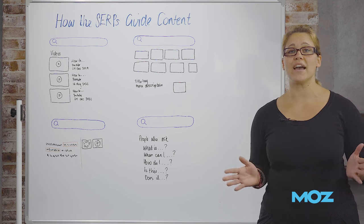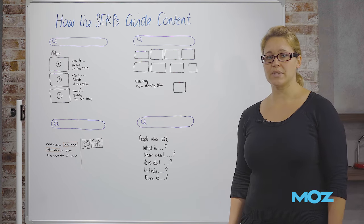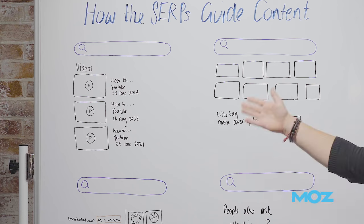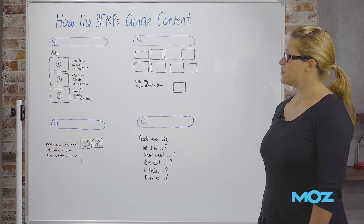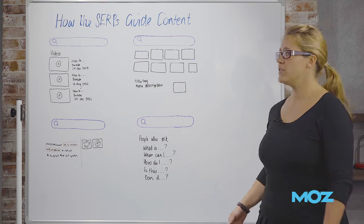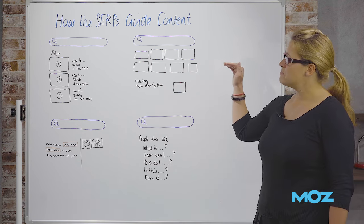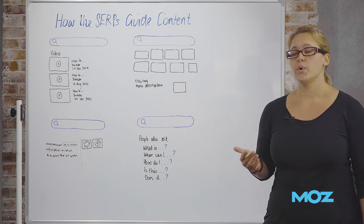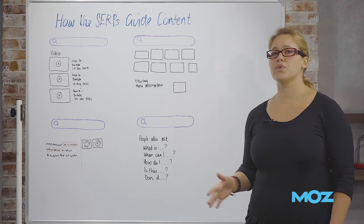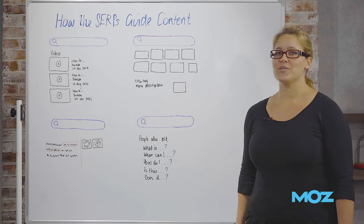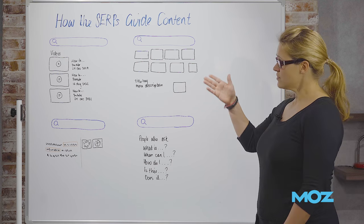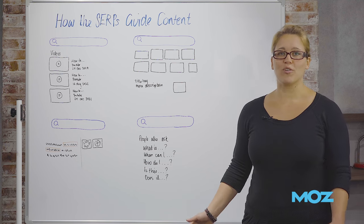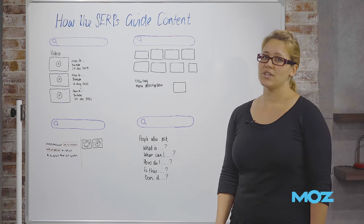Now let's assume you have identified your main keyword or topic that you want to create content for on your website. Before you start creating any content, put that into Google and see what comes up. Here in the first section we see a full list of video results. The whole first page of Google can be full of videos — you have the little thumbnail, a title, where it's hosted (in most cases YouTube), and the date the video was published. This happens quite often for how-to queries — how to clean something, how to edit a photo or video. If this comes up for your keyword, it means you should create videos; don't start writing long-form content.